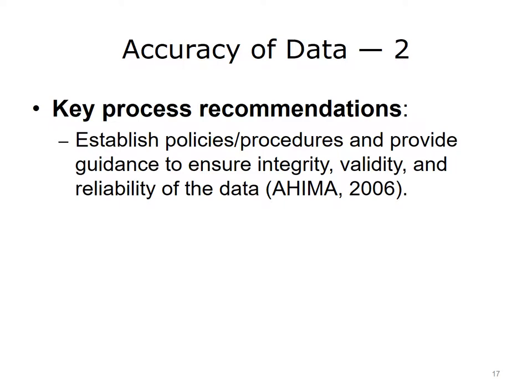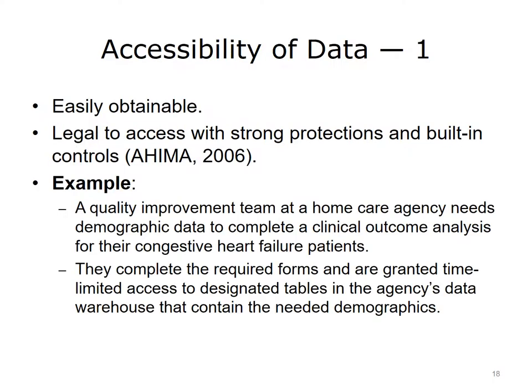Appropriate edits must be made to ensure accuracy prior to warehousing the data for future use. Exception and error reports should be developed so that corrections to the data can be made. For example, some diagnoses or patient locations may be incorrect for the age or gender of the patient. Screening for these types of problems and making corrections will improve the accuracy. Accessibility is the extent to which data is available or easily obtainable for use. But easily obtainable does not mean that unauthorized individuals should be able to gain entry into protected personal health information.